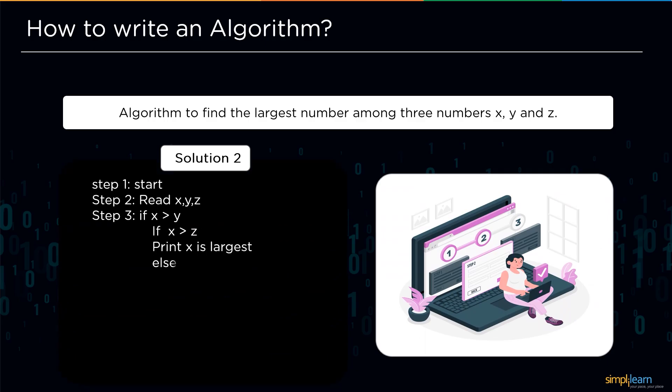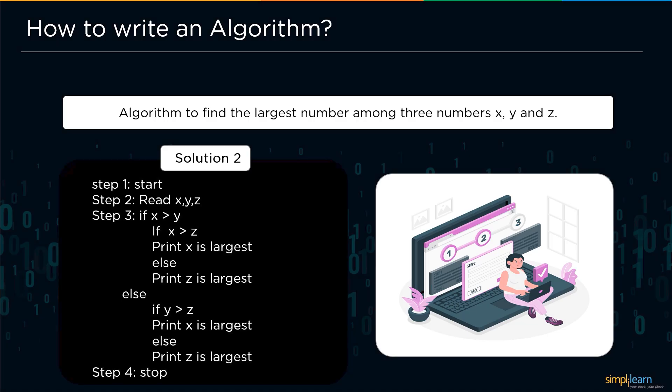Let's have a look at what the next solution has to offer. In this algorithm we begin by reading all three variables, then compare all three numbers in the third step to determine the largest number. If x is greater than y, then there is another if-else statement that states if x is greater than z then x is largest, otherwise z is the largest. Then there's an if-else statement which says that if y is greater than z then y is greatest, otherwise z is the greatest of the three numbers. So this is how we have multiple solutions to the same problem.